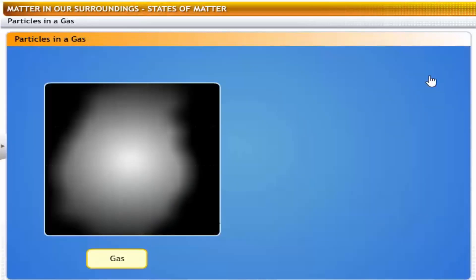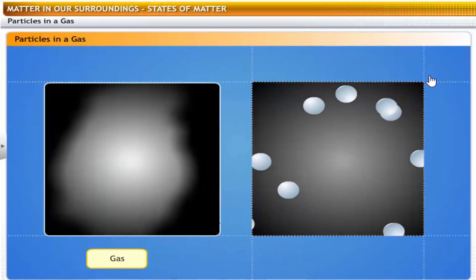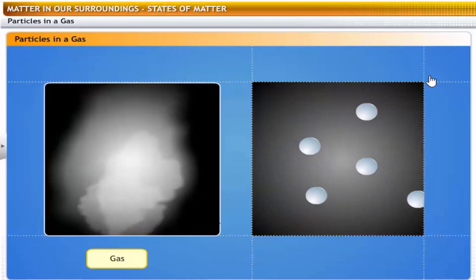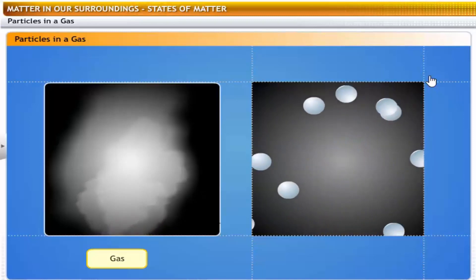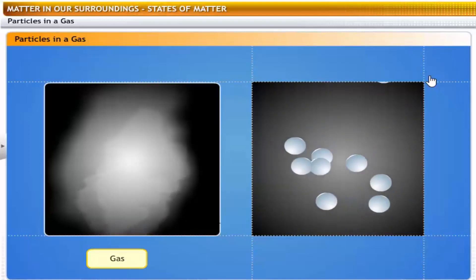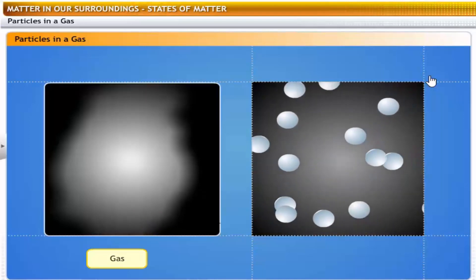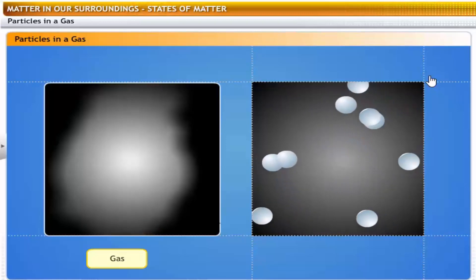In gases, the particles are not packed together at all, because their kinetic energies are high enough to let them break away from any boundaries. They are free to move around in random motion. That is why gases have no definite shape or volume, and they flow and diffuse easily. They collide with each other and with the walls of their container. That's how a gas exerts pressure on its container. Also because the spaces between the particles are large, gases are highly compressible.